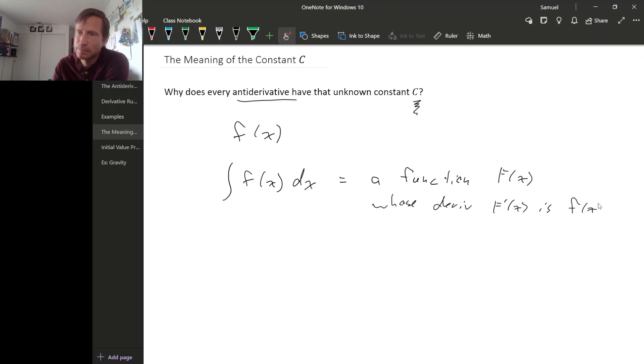But that means it's a function whose tangent line at x has slope f of x. Right? If we interpret it in terms of graphs.